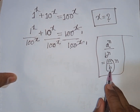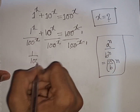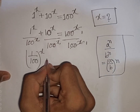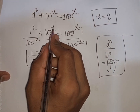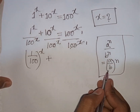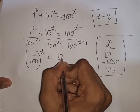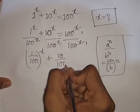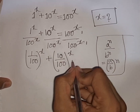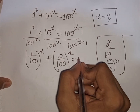According to this formula, we can write 1 over 100 bracket power x plus 10 over 100 bracket power x is equal to 1 over 1, that means 1.